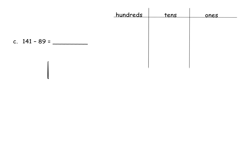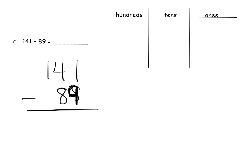I'm going to begin by recording this vertically: 141 take away 89. There's my 89. I think I'll model it, but I'm not going to do it in parallel this time. We're going to do the whole number disks method first. So let's get this going: one hundred, four tens, and one one.